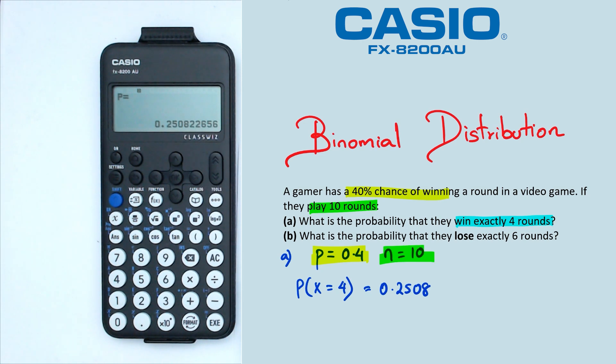Now remember that this is question A. Now when we look at question B, our number of trials is still going to be 10. However, there is a slight change in this question: we've actually got lose exactly six rounds. Now if you think about it, winning exactly four rounds and losing exactly six rounds should be the same probability.